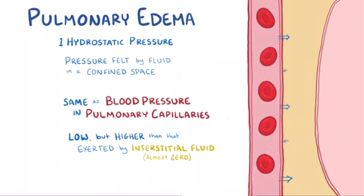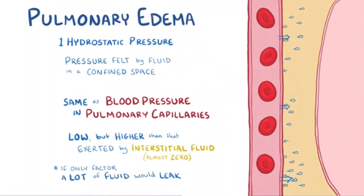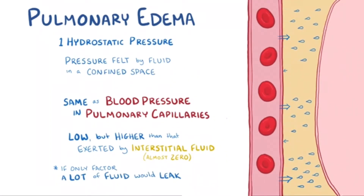So to be clear, if hydrostatic pressure was the only factor involved, a lot of fluid would be continuously leaking out of the pulmonary capillaries and into the lung's interstitial space.